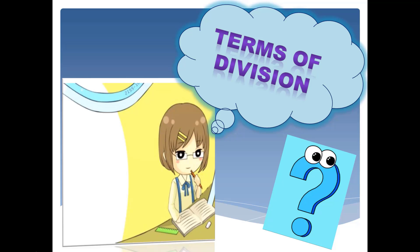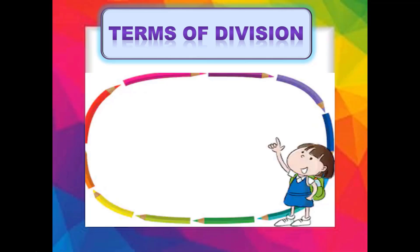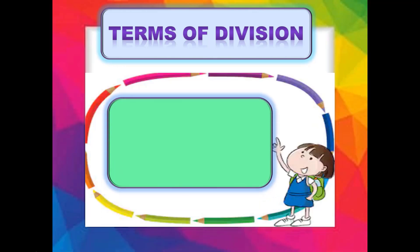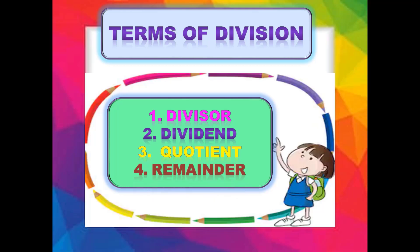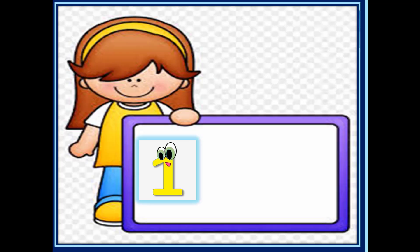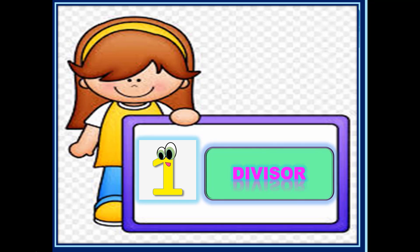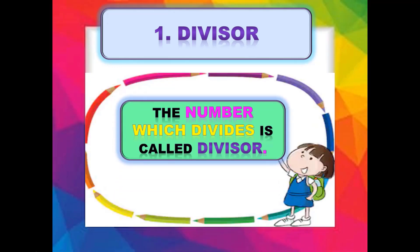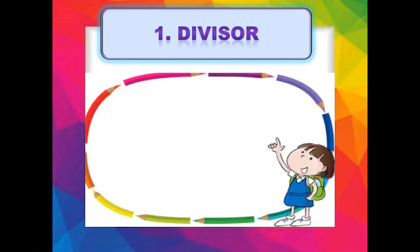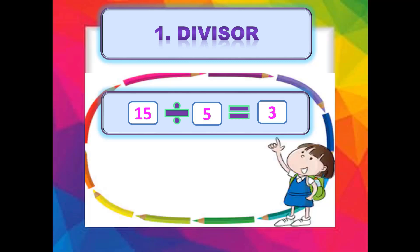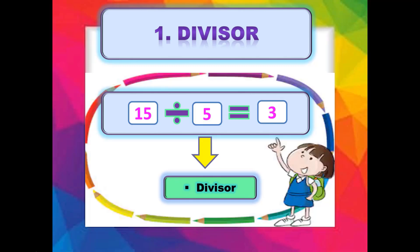Now, what are the terms of division? Division میں ہم 4 terms use کرتے ہیں: divisor، dividend، quotient، اور remainder۔ پہلی term ہے divisor۔ The number which divides is called divisor۔ Example: 15 divided by 5 equals 3 — یہاں 15 اور 5 میں سے چھوٹا number 5 ہے تو 5 آپ کا divisor ہے۔ Linear form میں جو number چھوٹا ہوگا وہ آپ کا divisor ہوگا۔